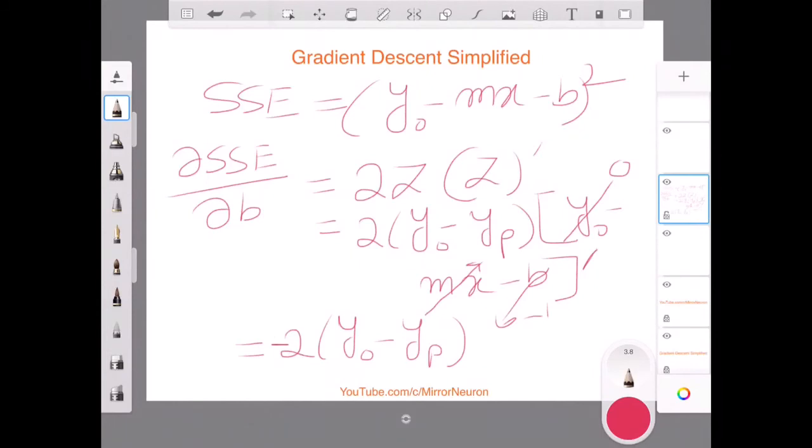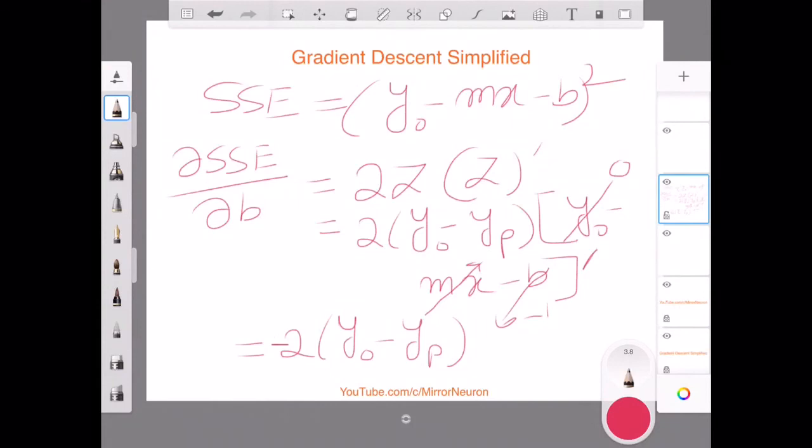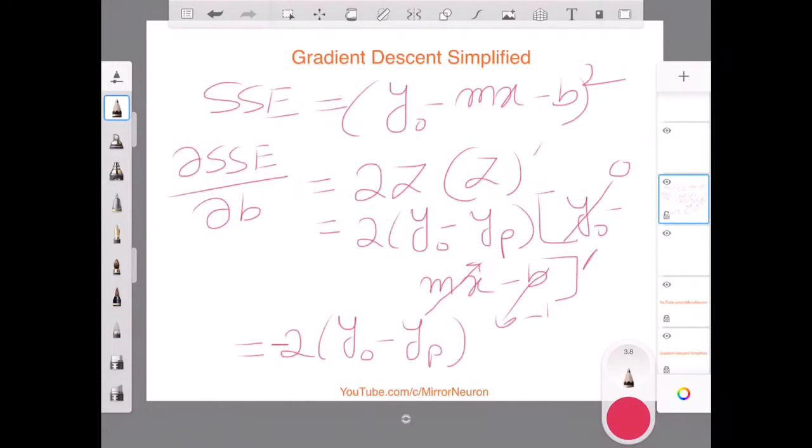So basically, now you saw there are two different gradients, and we also saw the direction. It's negative in both cases, and this we are going to then use for calculating our new values of m and b.